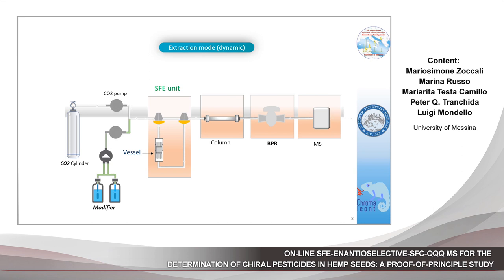This step is called the dynamic extraction mode and is probably the most important one, because we must transfer the analyte from the vessel into the analytical column, and also focus the extracted analyte at the head of the analytical column in order to achieve good separation. At the end of the dynamic extraction mode, both valves return to the original position, thus the entire flow is again directed into the analytical column, through the back pressure regulator, and finally into the MS spectrometer.